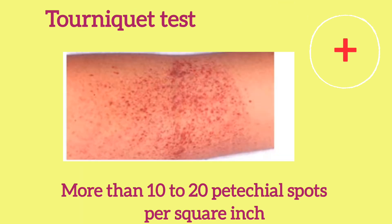The test is positive if there are more than 10 to 20 petechial spots per square inch.